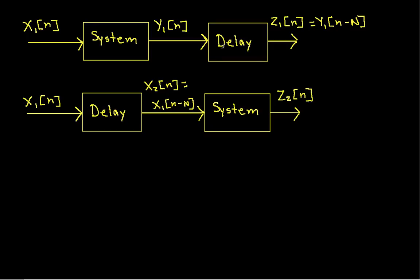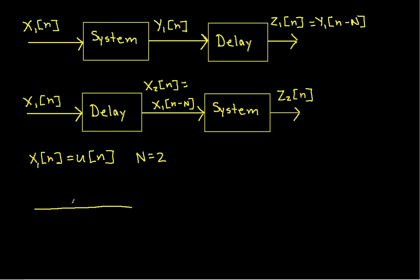I have reason to believe this system is time varying. To show that, all you need is one case where the two outputs are not equal. The example we'll use is to let the input x1 be the unit step function, and let our delay be 2. So x1 will be 1 at time 0, time 1, time 2, time 3, and so on, and 0 for time negative 1, negative 2, and so on.